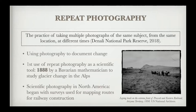The first use of repeat photography is known to be around the late 19th century, by a Bavarian mathematician named Sebastian Finsterwalder. He was noticing that a lot of the glaciers in his neighboring Alps were starting to change, and he wanted to document those changes. So he went to these glaciers, set up multiple photo stations on different parts, took photos, and then a couple of years later came back and repeated those same photos from those same locations. By having the original and the subsequent photographs, he was able to compare and contrast change within these glaciers.